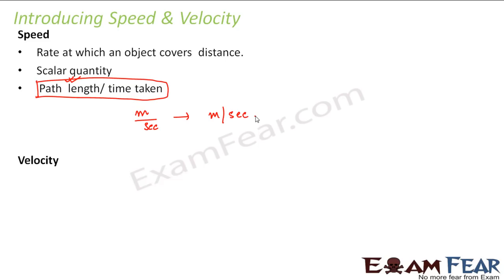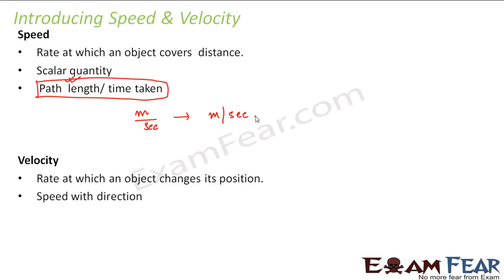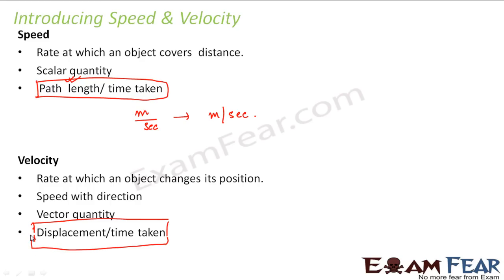Now let us look at velocity. Velocity is again the rate at which an object changes its position, but it is a vector quantity — it is speed with direction. Since it is a vector quantity, it depends on displacement, which is also a vector quantity. So velocity = displacement / time taken. Just as there is a difference between displacement and distance, similarly there is a difference between speed and velocity: speed is scalar, velocity is vector.